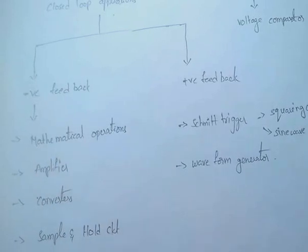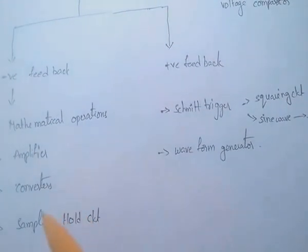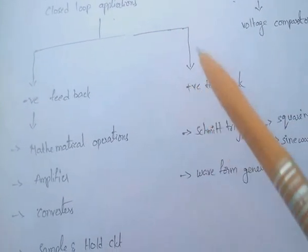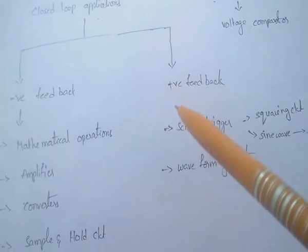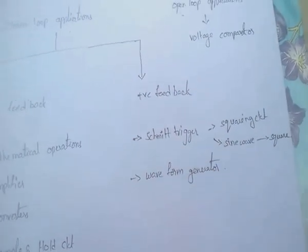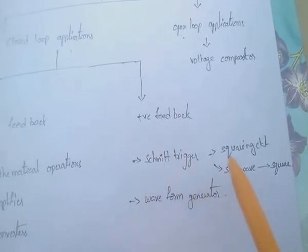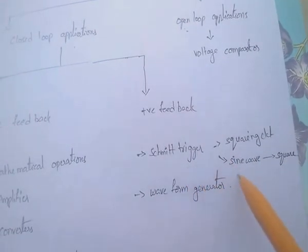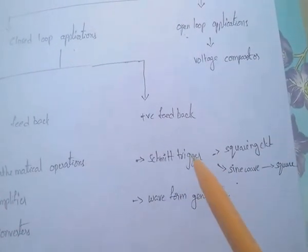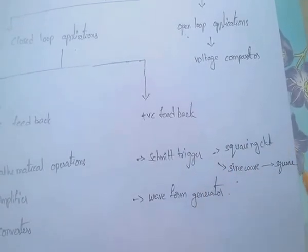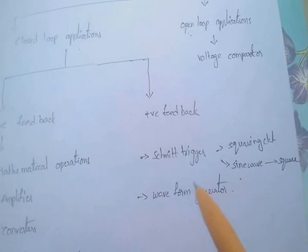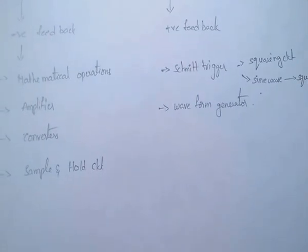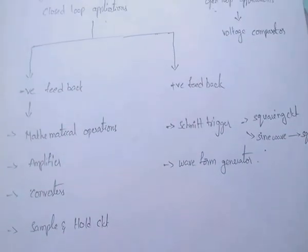With negative feedback it is used as an amplifier and also as converters. With closed loop positive feedback, it is used as a Schmitt trigger — which is a squaring circuit that converts sine wave into square wave. It is also used as a waveform generator. Ok friends, thank you. In the next video I will discuss remaining topics of electronic devices and circuits.